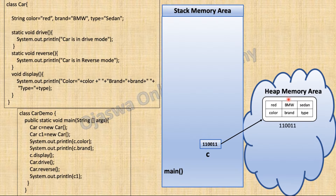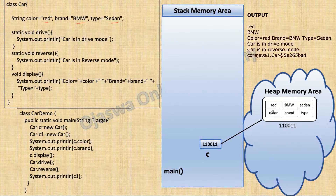Instance variables belong to every single object of the class. Memory for instance variables of class car will be allocated to the object. Object C will have its own copy of the instance variables color, brand, and type. We initialized color to red, brand to BMW, and type to sedan. All these values will be assigned to the variables and stored inside the object. When this first statement is executed, reference variable C is created on the stack, the object is created on the heap, memory for instance variables is allocated inside the object, and values are assigned.